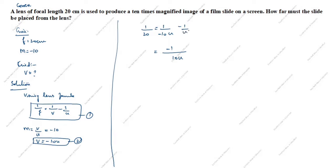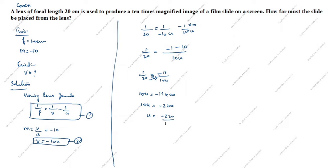So 1 by 20 equals minus 11 by 10u. Cross-multiplying, 10u equals minus 220. Therefore u equals minus 220 divided by 10, and u equals minus 22 centimeter.